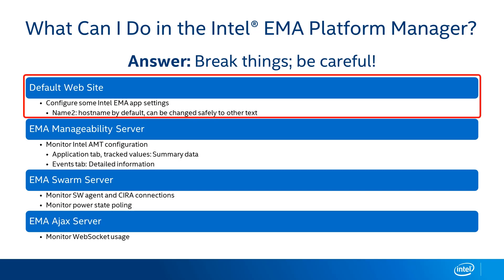There are a number of configuration items exposed as part of the default website option. We don't recommend changing any of those unless you know precisely what you're doing. The one exception is the name-to-value field you'll see in there — that's the hostname of your Intel EMMA instance by default, but you can change that text. For instance, in most of my non-production demo environments, I'll change that from the EMMA hostname to a string like 'not for production use.'